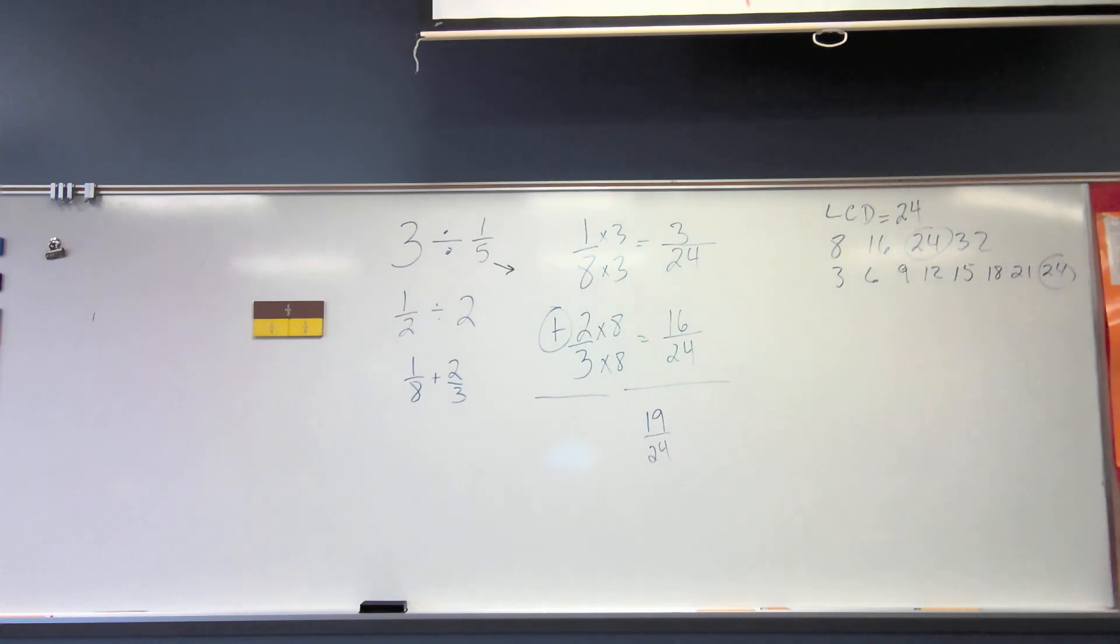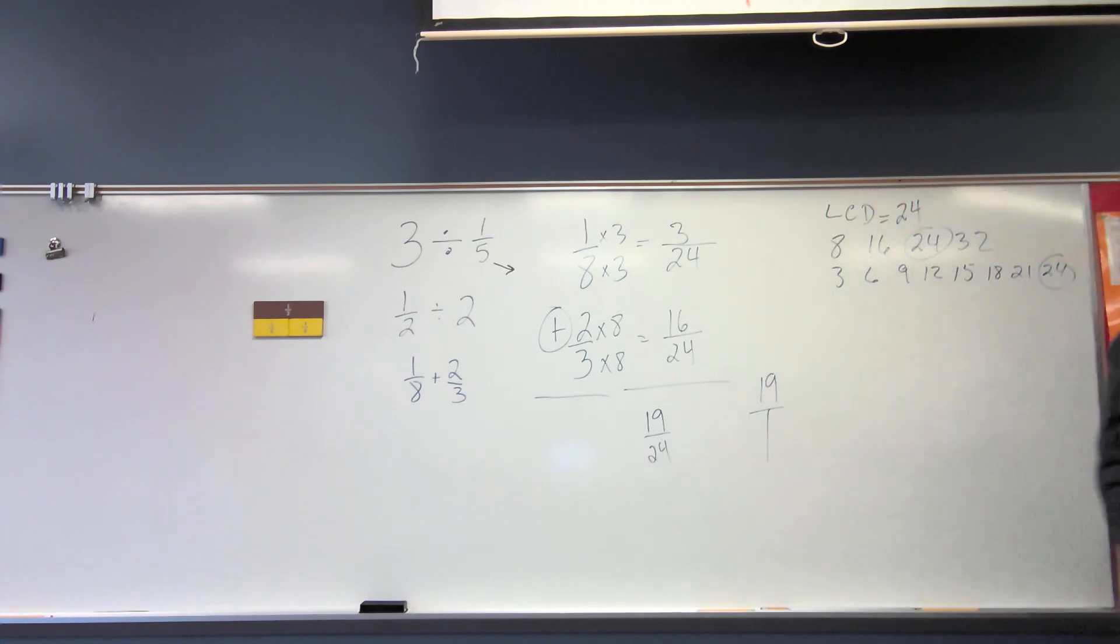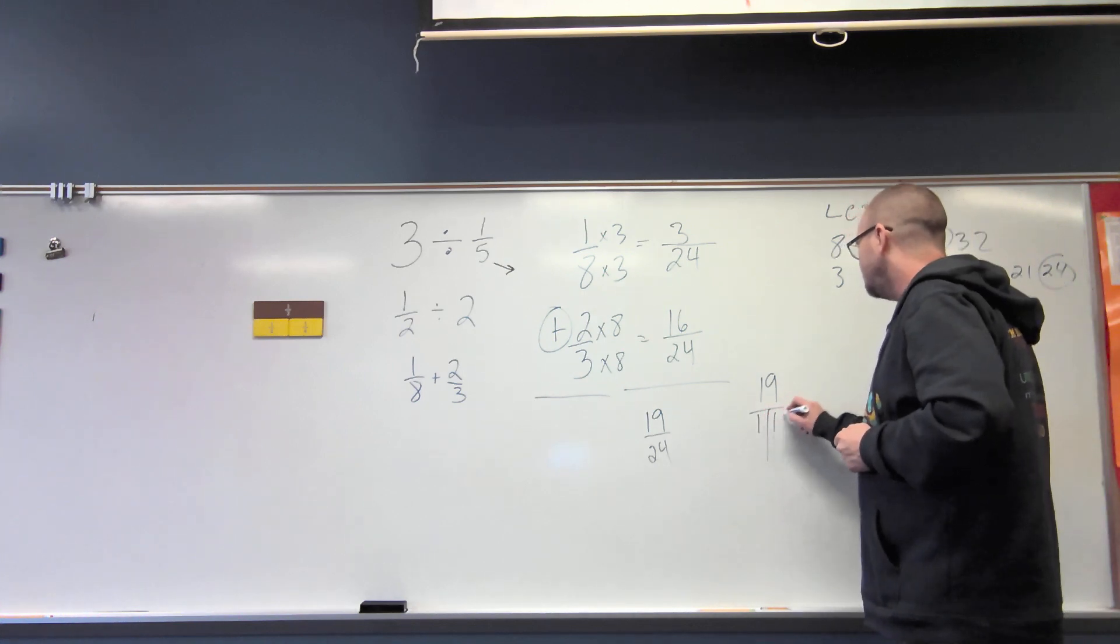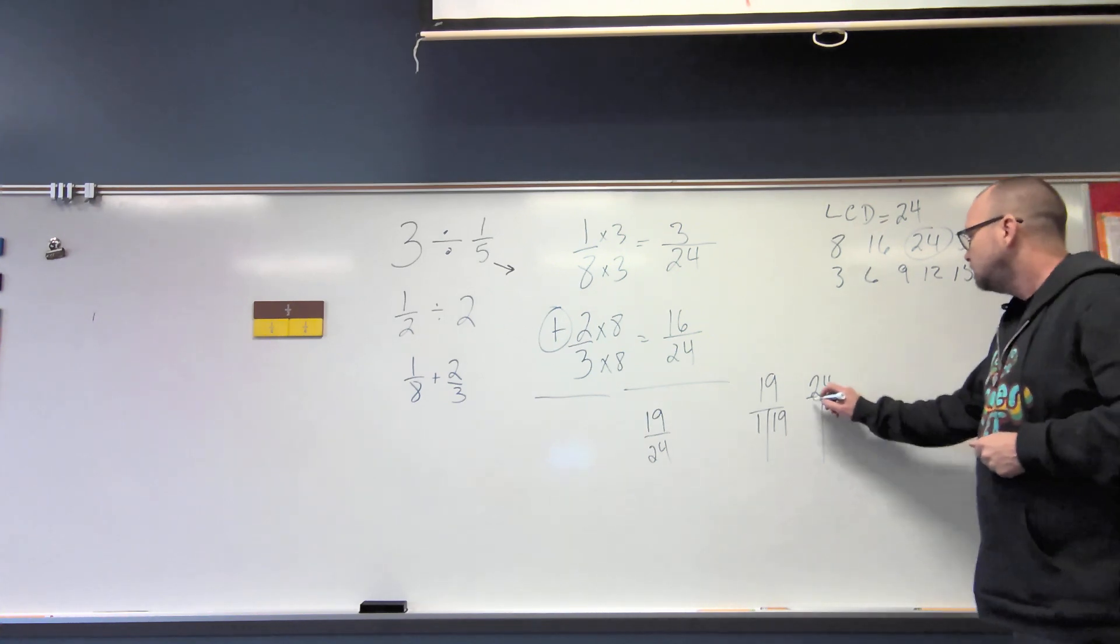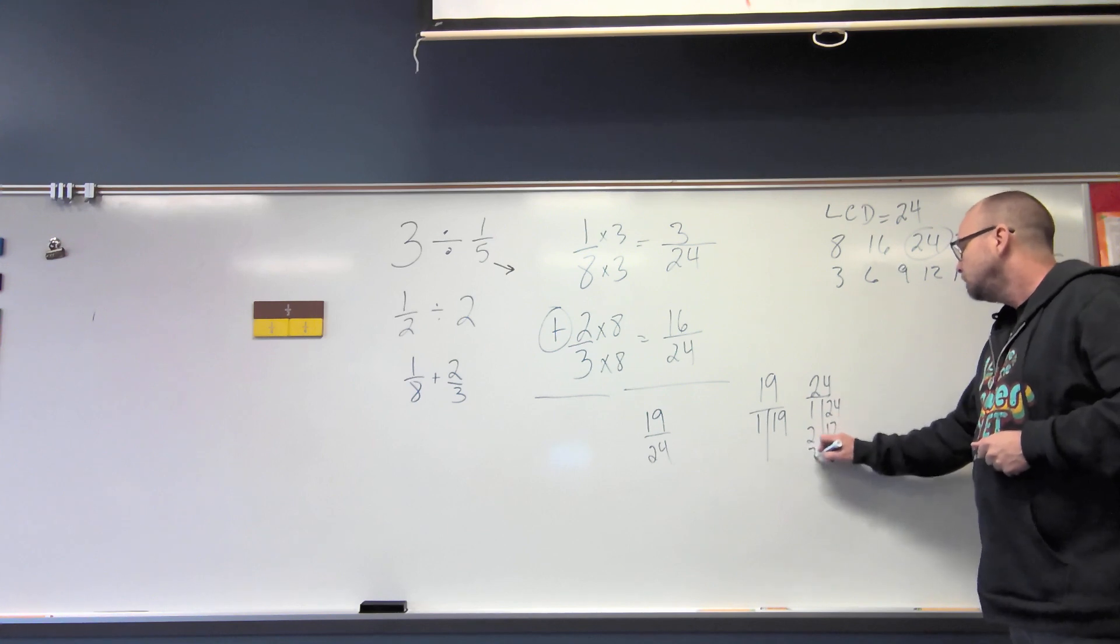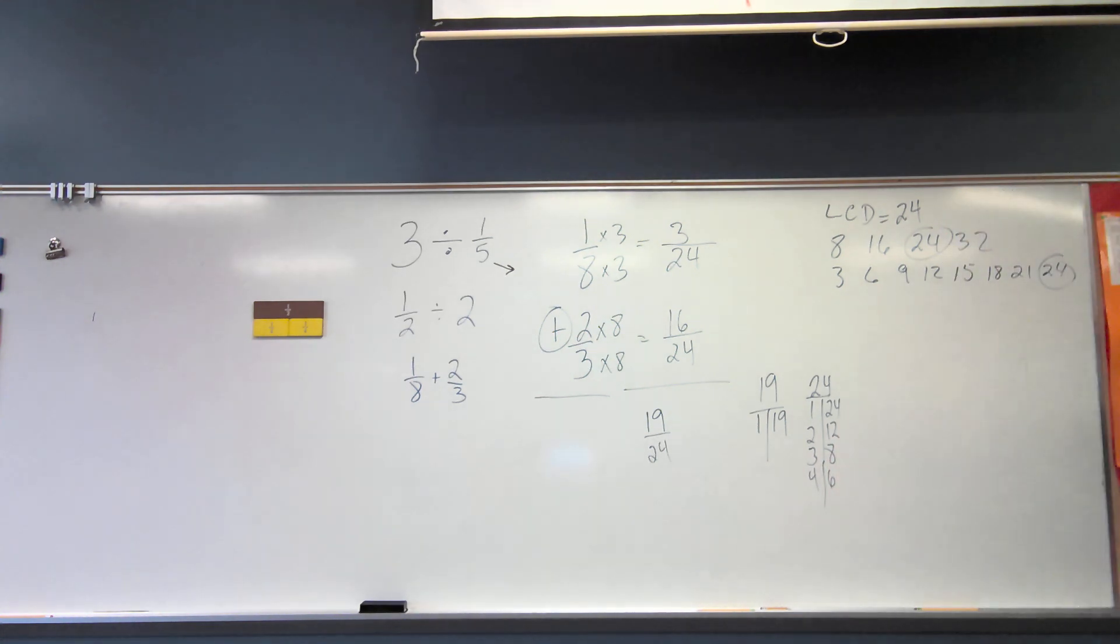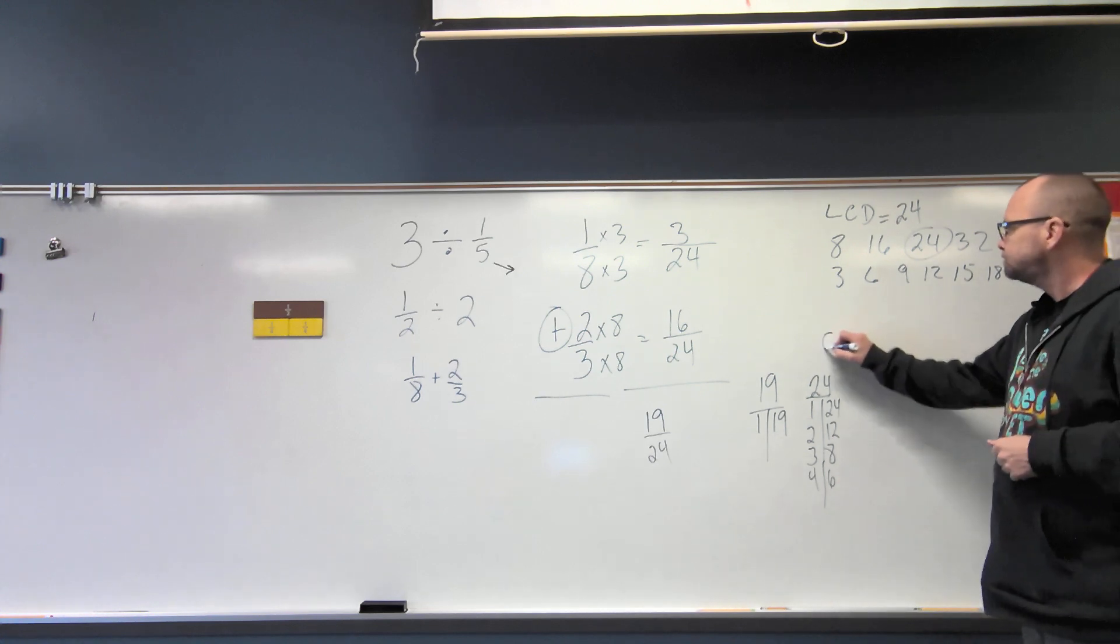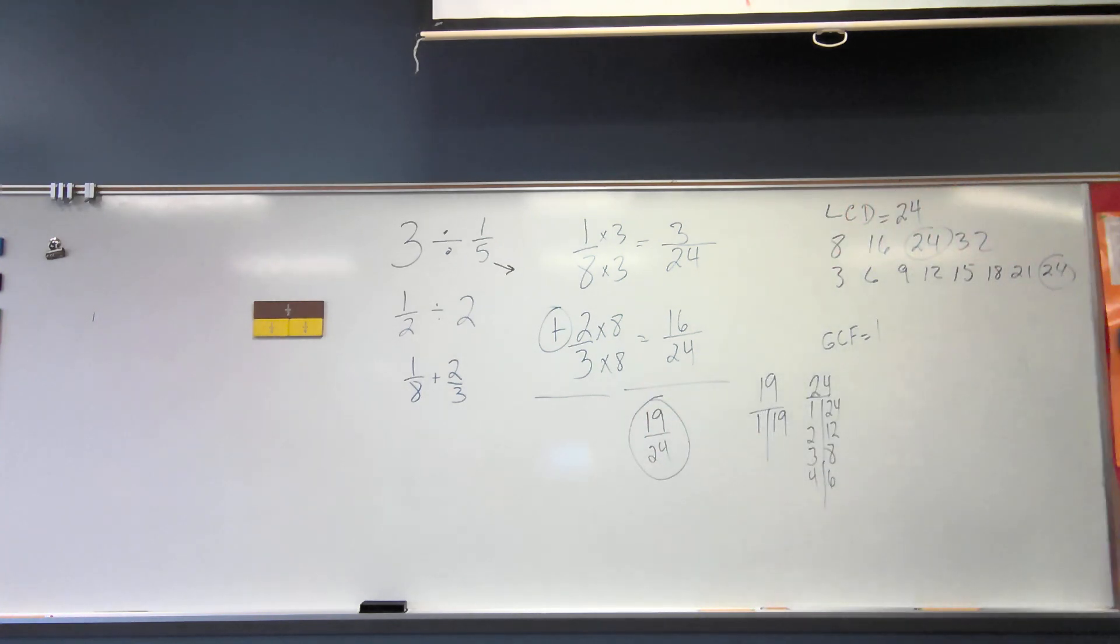Now, until you get really doing a lot of these, you're going to always want to see if they can be simplified. What kind of number is 19? Prime. It only has two factors, one and itself. What kind of number is 24? Composite. So it's going to have more than 1 and itself. 1 and 24, 2 and 12, 3 and 8, 4 and 6. What is the greatest common factor? 1. Greatest common factor equals 1. If the greatest common factor equals 1, that, my friends, is your fraction in lowest terms.